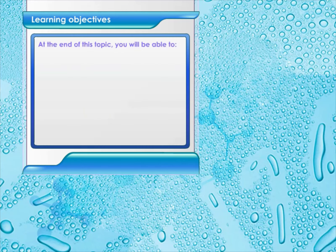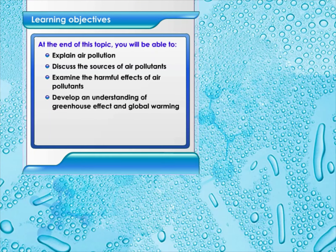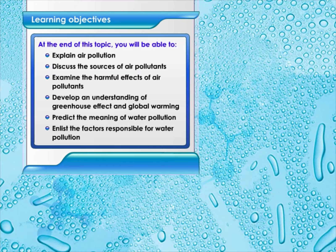Learning objectives. At the end of this topic, you will be able to explain air pollution, discuss the sources of air pollutants, examine the harmful effects of air pollutants, develop an understanding of greenhouse effect and global warming, predict the meaning of water pollution, and list the factors responsible for water pollution.